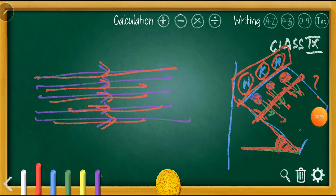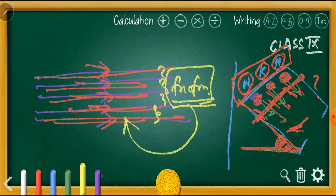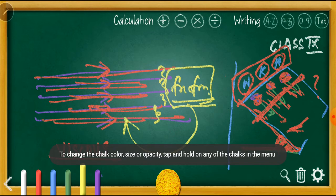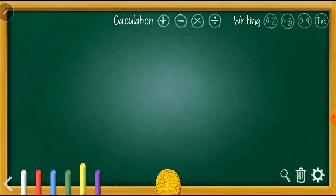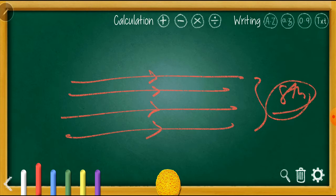Just as there is frictional force between surfaces, between the various layers of a liquid in motion there is also a frictional force. This frictional force between the layers of a fluid is called viscous force or viscosity. So what do you mean by viscosity? Viscosity is actually friction between the layers of a liquid. This frictional force does not allow relative motion between the layers.